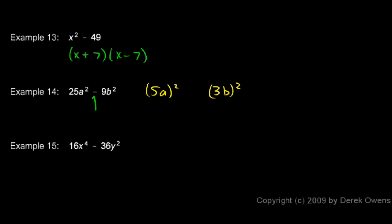And it's the difference of those two things. So that means it will factor as thing 1 plus thing 2, so I'll write 5a plus 3b times thing 1 minus thing 2, 5a minus 3b. And you could check that with FOIL, and you would get your outer and inner terms canceling out, and it would give you exactly that.